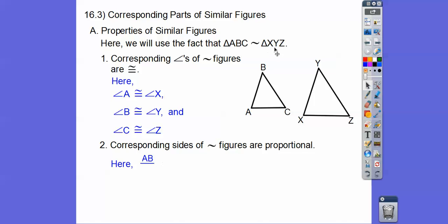Here, the corresponding side that goes with AB, here's AB, so that would be XY, the first two letters on that one. So AB over XY equals BC, the second and third letter, so the second and third letter over here. And it also equals, if I did the first and third letter, it's going to equal the first and third letter XZ right there.